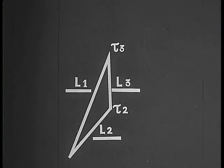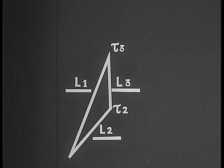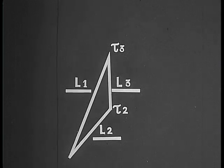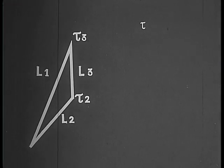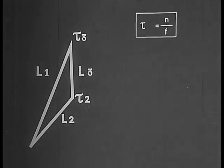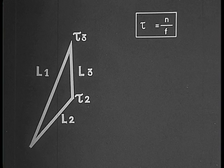Since the feedback loop must contain a whole number of wavelengths, we may write tau is n over f, where tau is the time necessary to pass once through the feedback loop, and n is any integer larger than or equal to one.